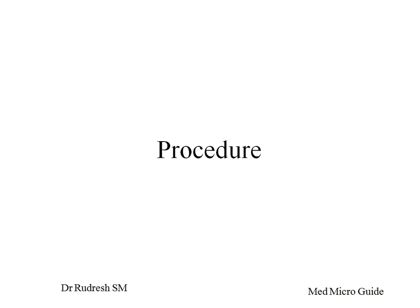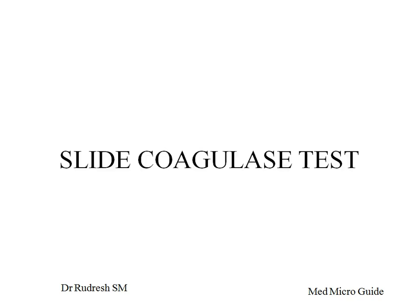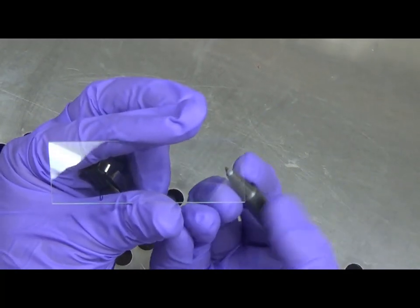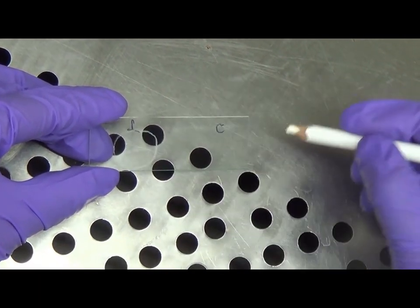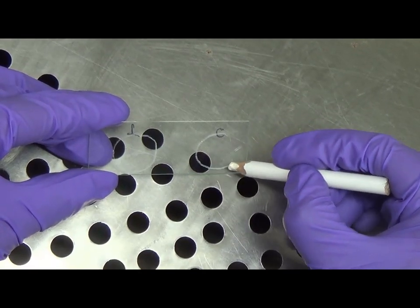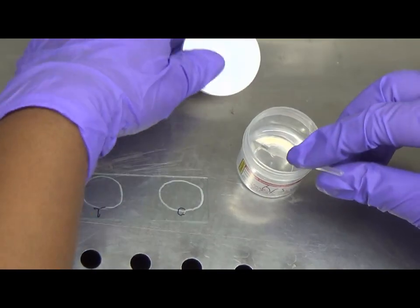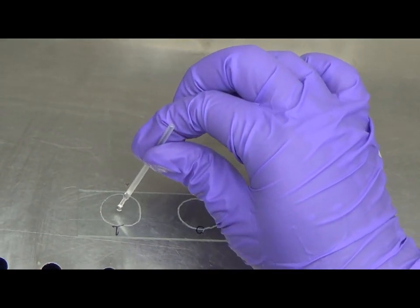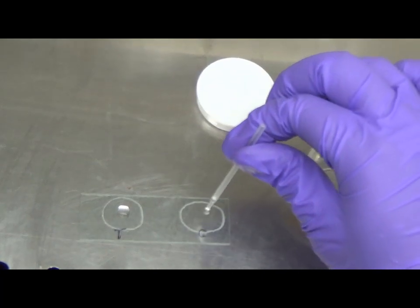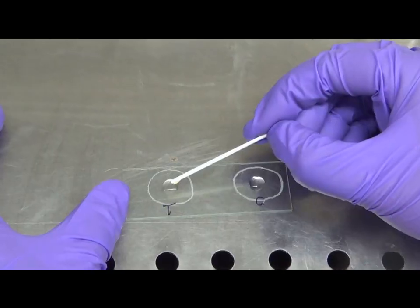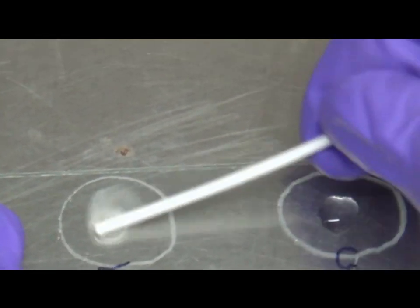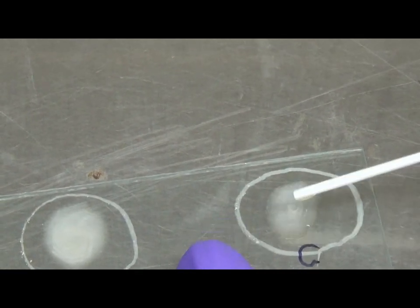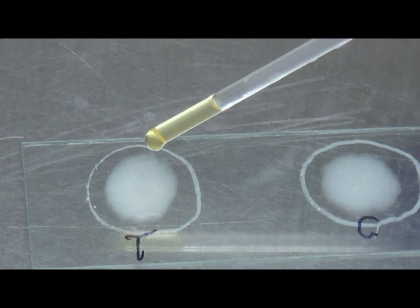Now let us see the procedure and interpretation of the test. First, the slide coagulase test. Take a clean glass slide and mark T for test and C for control. Draw two circles on the slide with a wax pencil. Place a drop of saline in both circles. With the help of an applicator stick, take the colony and gently emulsify it in the liquid of each circle. Place a drop of undiluted pooled human plasma into circle T.